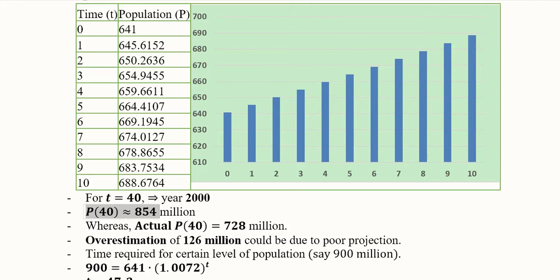Now this is the estimated value on the basis of this function, but actually if we measure the population in the certain year, that is 2000, after 40 years of the beginning of our analysis, the actual population is 728 million.